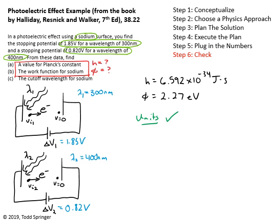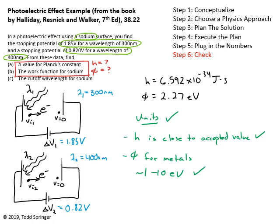The other thing to check is whether the numbers seem reasonable. We already verified that h is very close to the accepted value. For the work function: work functions for metals are usually roughly 1 to 10 eV. If we had gotten 100 eV or 1000 eV, that would be too large; if we had gotten 0.0001 eV, that would be too small. Our value of 2.27 eV is on the right order of magnitude. Units are good and numbers are reasonable, so that's our final answer.